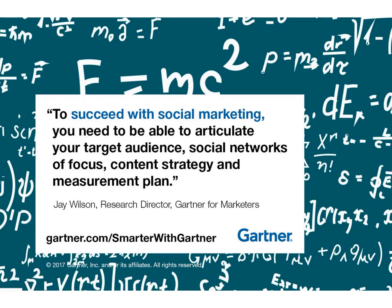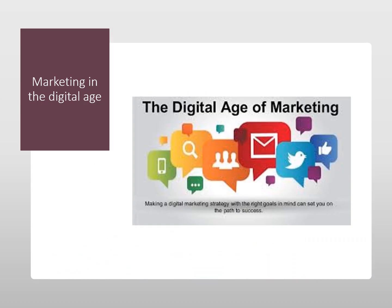Jay Wilson, the research director of Gartner for Marketers, says that to succeed with social marketing, you need to be able to articulate your target audience, social network of focus, content strategy, and measurement plan. Next, we move to marketing in this digital age.